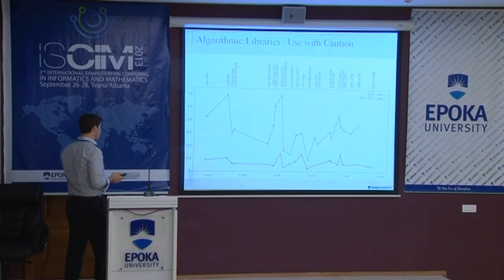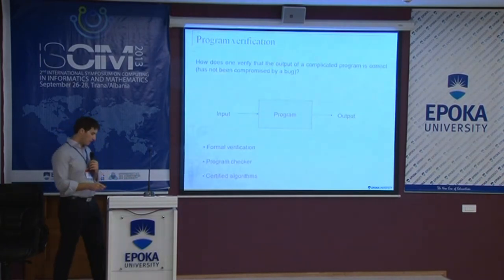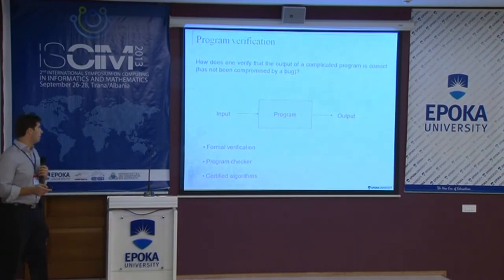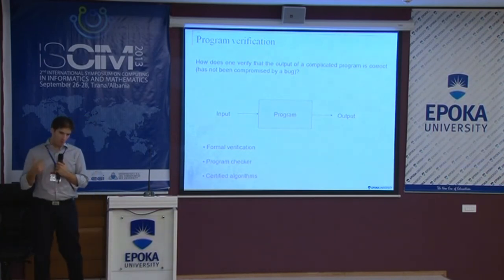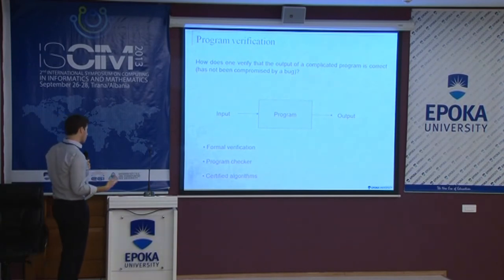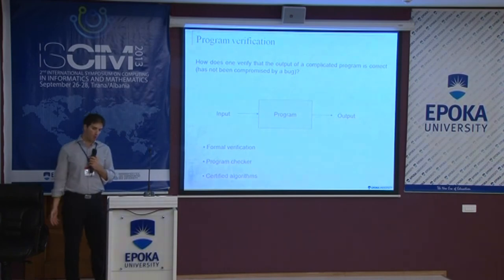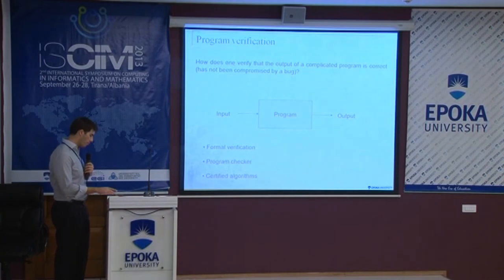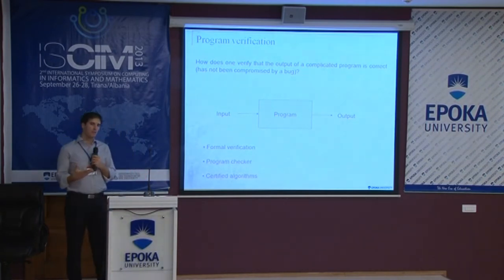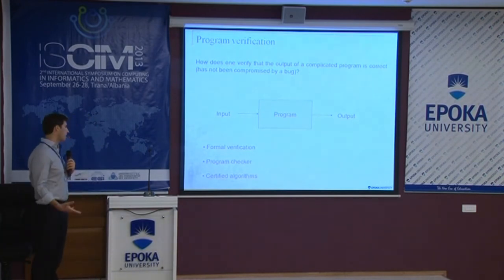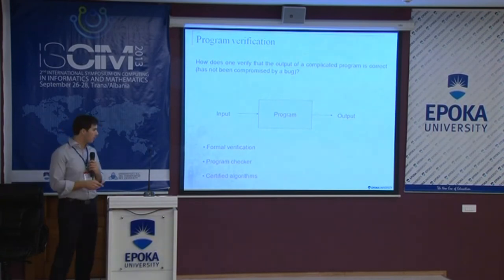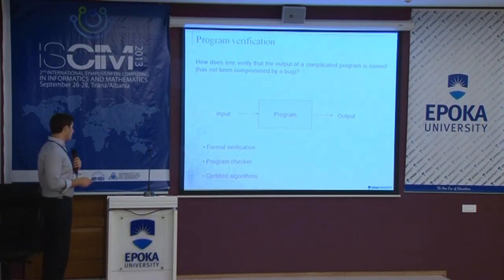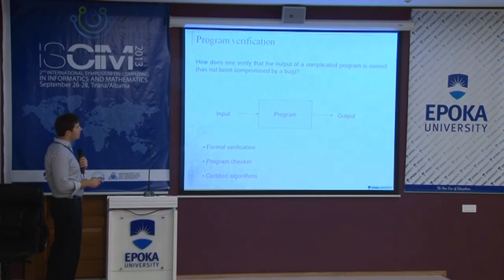A few final words about correctness. Think about a product: we want to use it but have no way to trust it. If our application is critical, we might need to take measures to ensure we get the right result. There are various ways to address this. The question is: given a program, we feed in input and get output — how do we verify the output is correct for the given input?